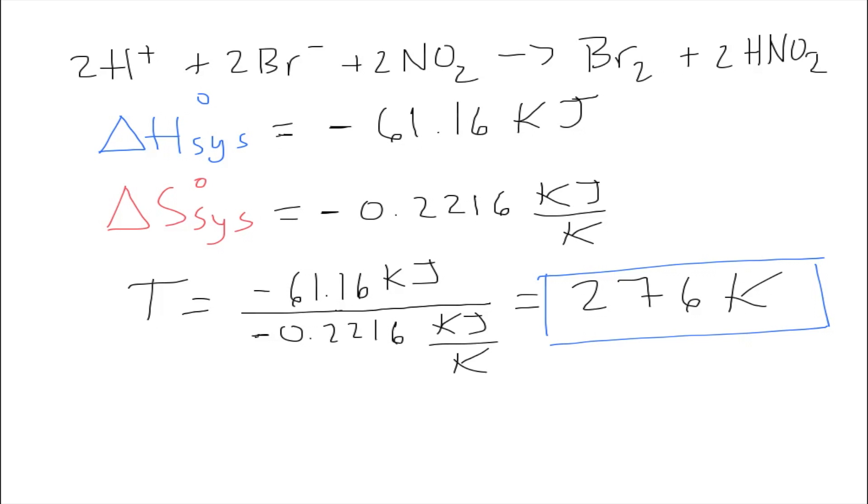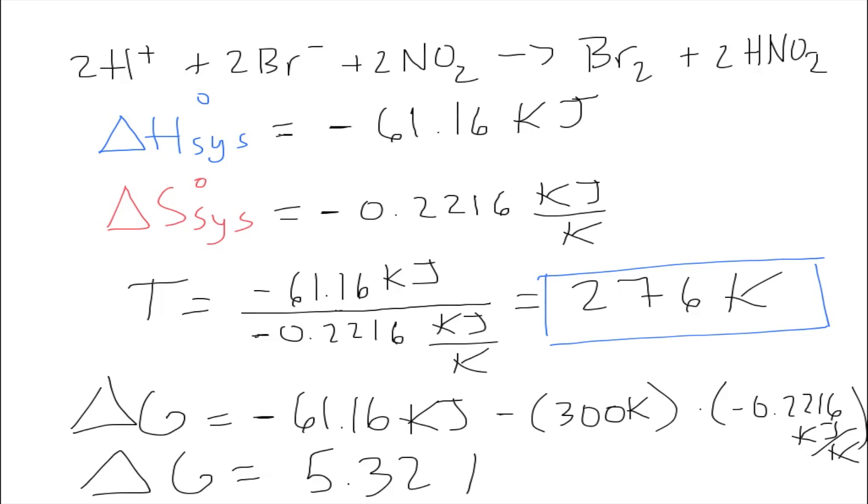So let's try that. Delta G is equal to negative 61.16 kJ minus 300 kelvin times negative 0.2216 kJ per kelvin. So this gives us a value of delta G equal to 5.32 kJ. That is above zero, that's positive.